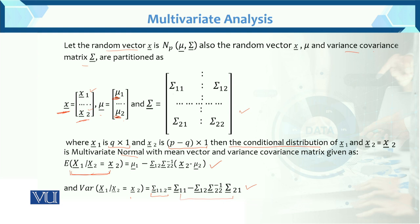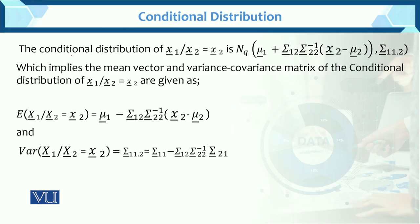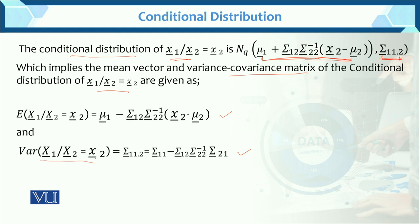Instead of writing the full conditional variance each time, we write sigma 1,1 dot 2 — it means this is the conditional variance. The conditional distribution of x1 given x2 has mean equals to the conditional mean formula and variance-covariance equals sigma 1,1 dot 2. The mean vector is the expected value of x1 given x2, and this is the variance-covariance matrix.